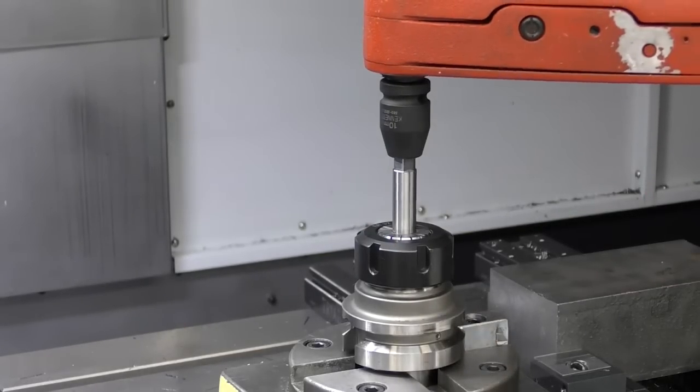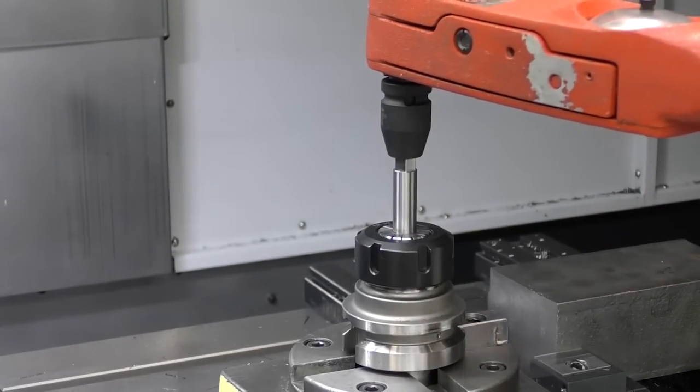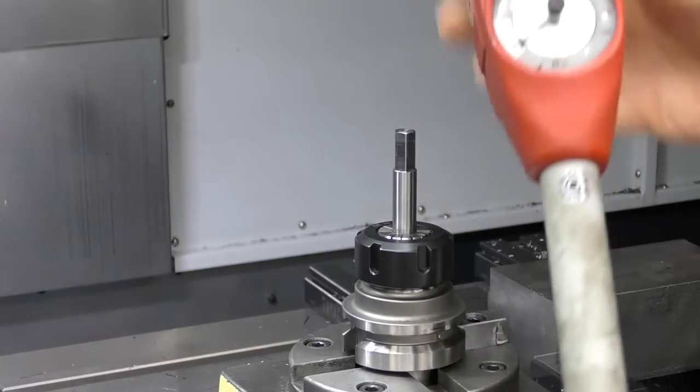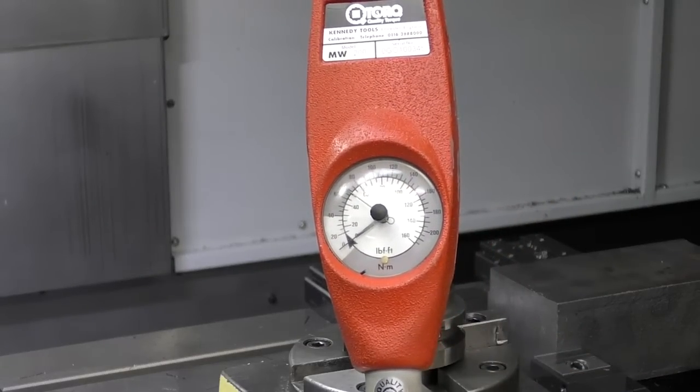Now you can see at this point the test bar slipping really easily inside the ER32 collet chuck, and it gives us a reading of 70 newton meters of gripping force.